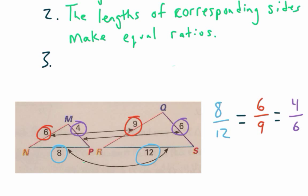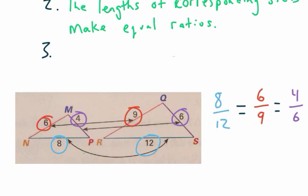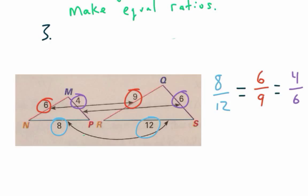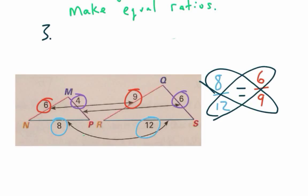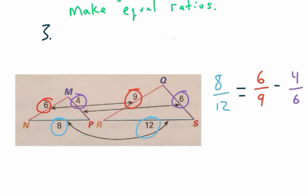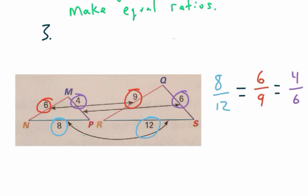We could check those ratios several different ways. You could reduce all the fractions — dividing by 4, they all end up being 2 thirds, so I know they're equal. Another way, if you have something that's hard to reduce, you could use cross products — those should be equal. So 8 times 9 is 72, and 6 times 12 is also 72, so those two ratios are equal. Then 6 times 6 is 36, and 9 times 4 is 36 — they're all equal.